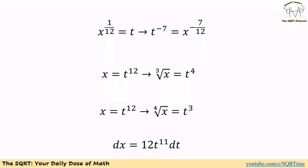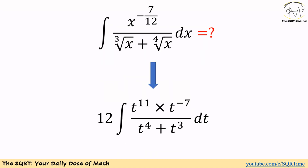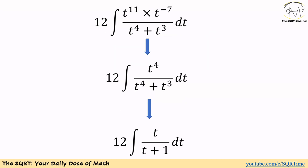Now let's replace everything in the initial integral. We end up with 12 times the integral of t^11 times t^(negative 7) over (t^4 plus t^3) dt. Simplifying t^11 times t^(negative 7) gives t^4, so we have 12 times the integral of t^4 dt over (t^4 plus t^3).